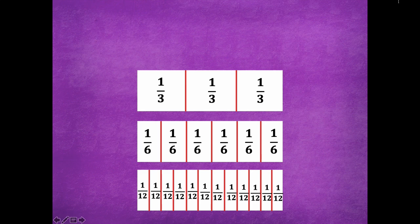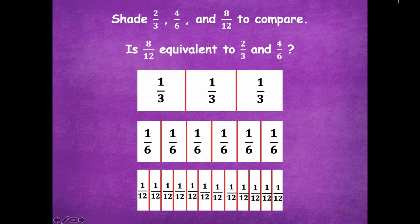Here's what you should have: thirds, sixths, and twelfths. You're going to shade two-thirds, four-sixths, and eight-twelfths to compare, because we're trying to see if eight-twelfths is equivalent to two-thirds and four-sixths. We already know that two-thirds and four-sixths are equivalent, but now we're seeing if eight-twelfths is equivalent also. Pause the video, shade two-thirds, four-sixths, and eight-twelfths, and be ready to answer if all of those are equivalent.